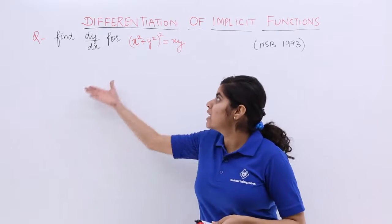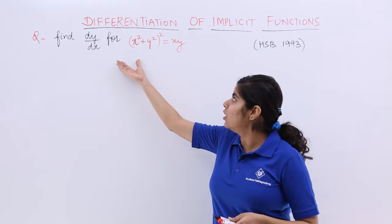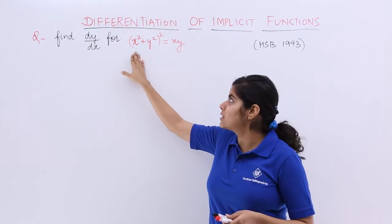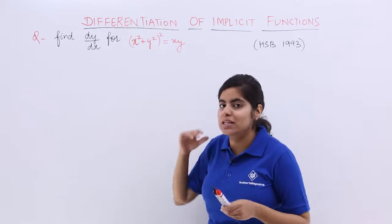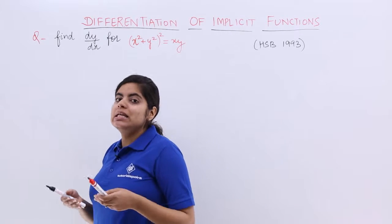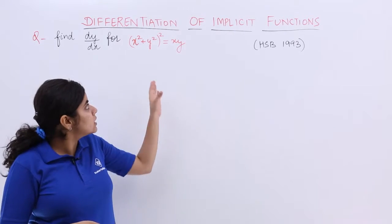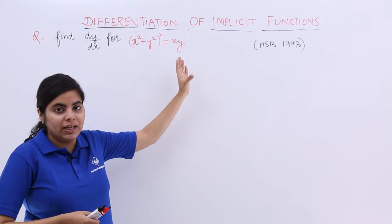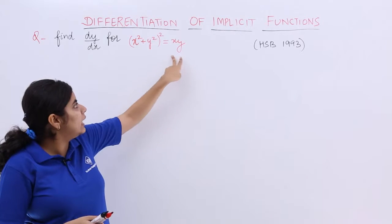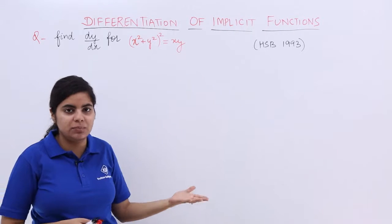The question says find dy by dx for (x² + y²)² = xy. Since it is an expression, we cannot explicitly find out the value because x and y are multiplied, they cannot be separated as such.